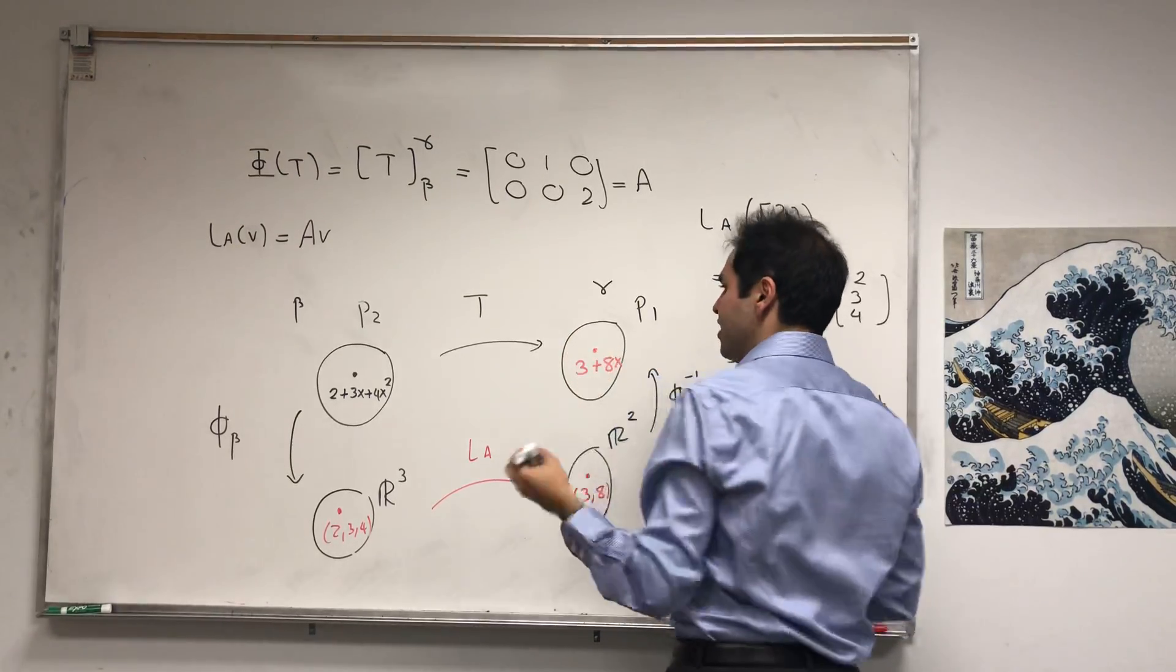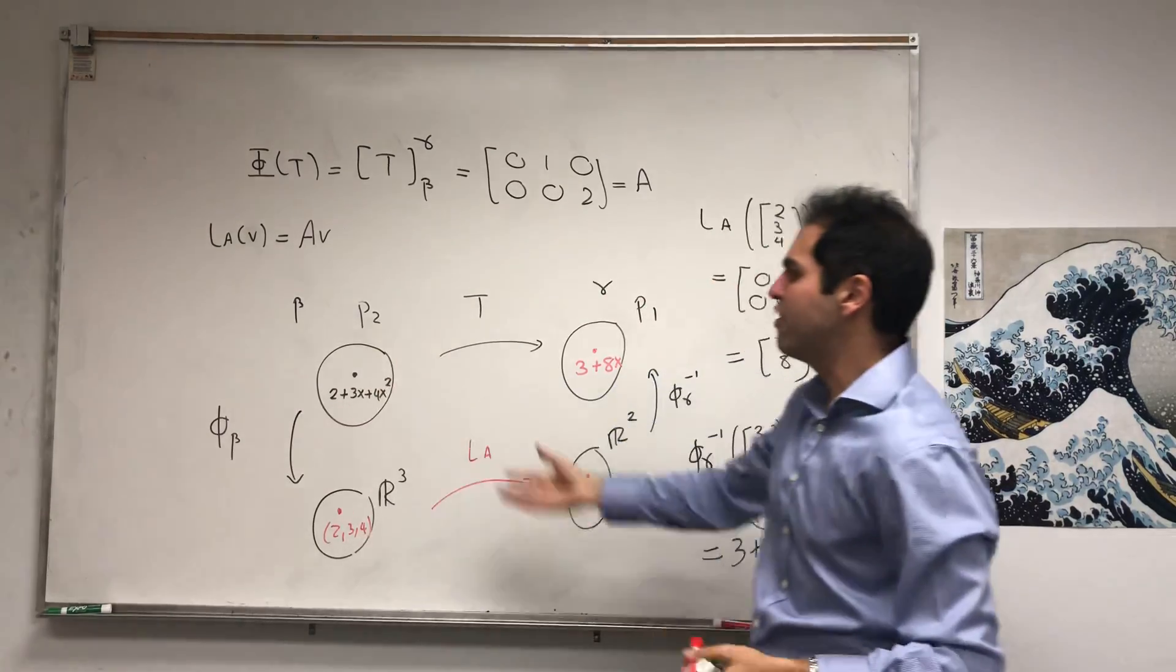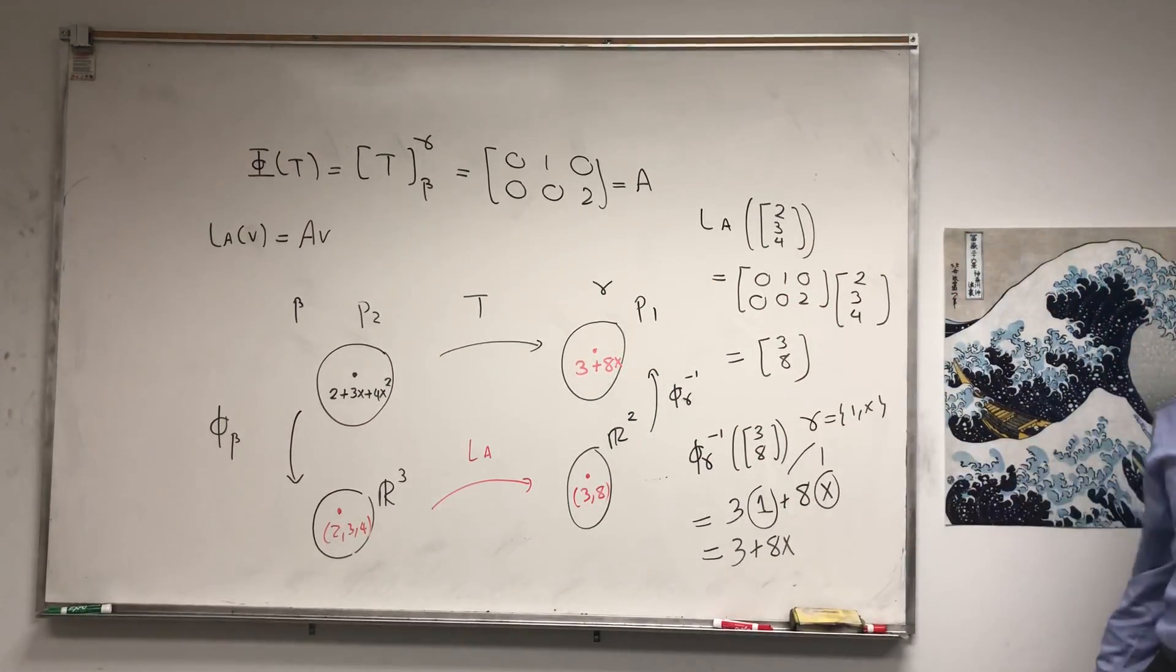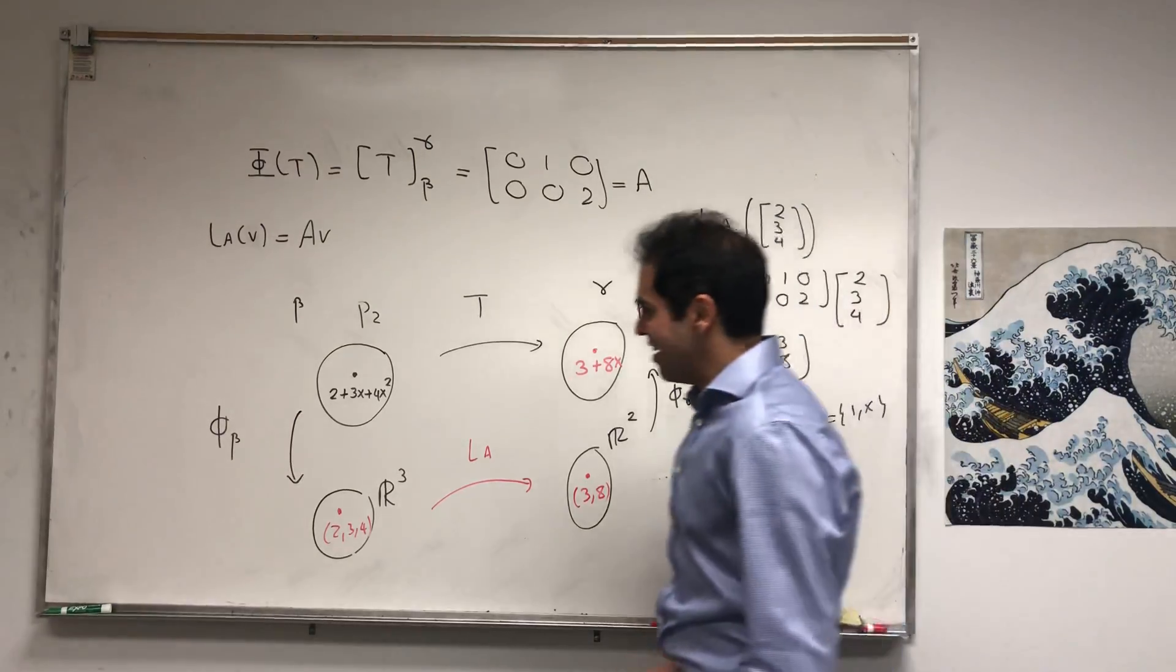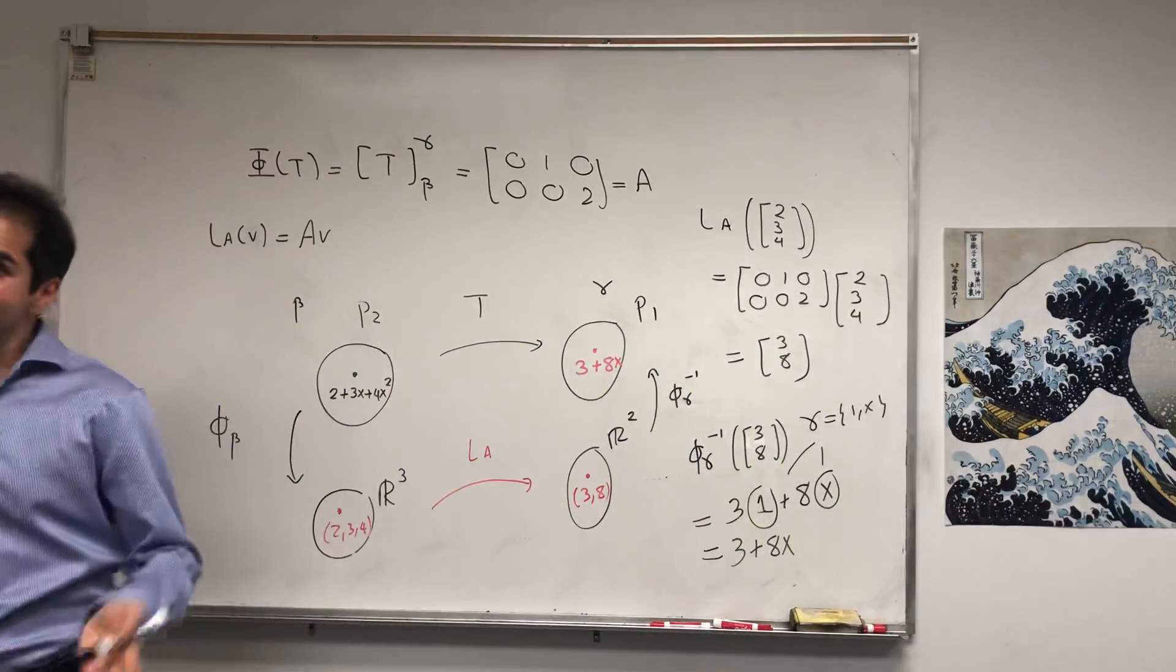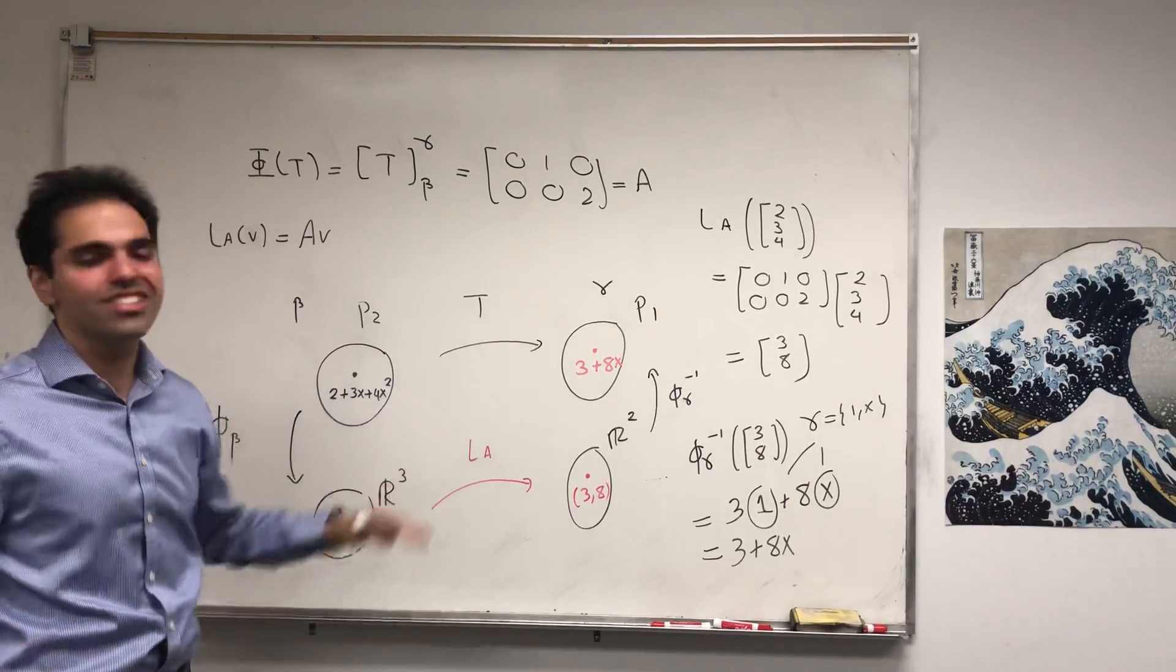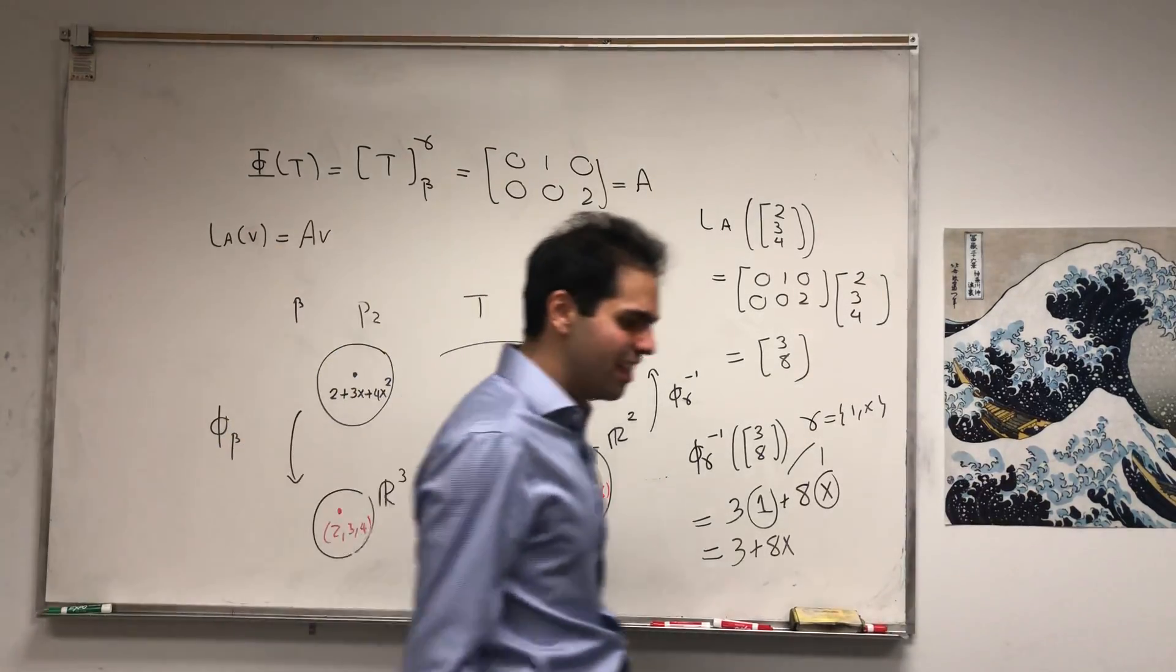And indeed, you can verify that the derivative of 2 plus 3x plus 4x squared is 3 plus 8x. And I know it's a ridiculous way of doing this problem, because in calculus you just know how to differentiate things.